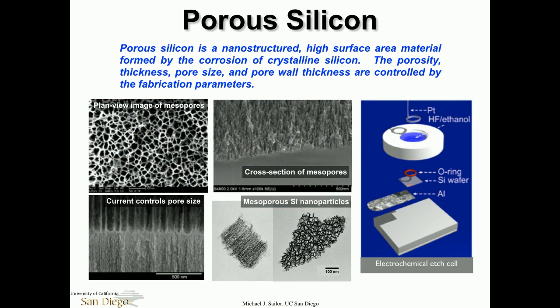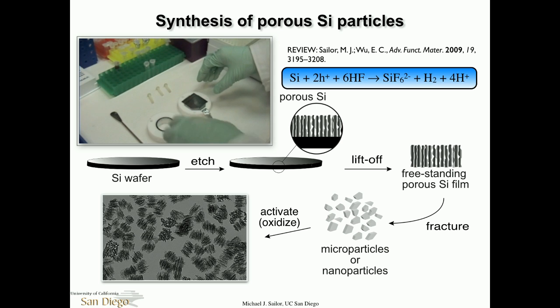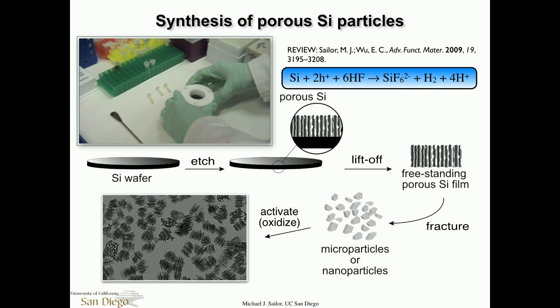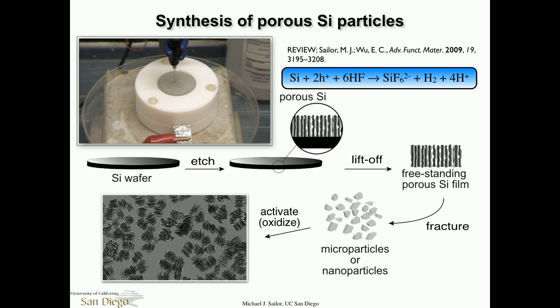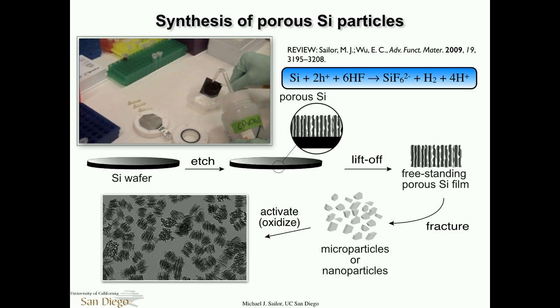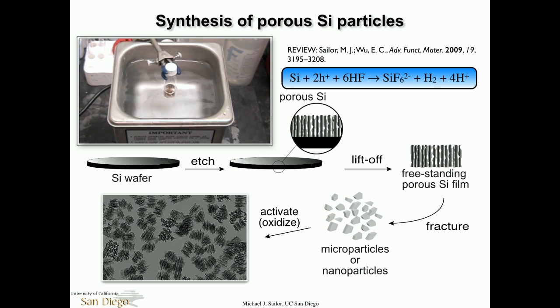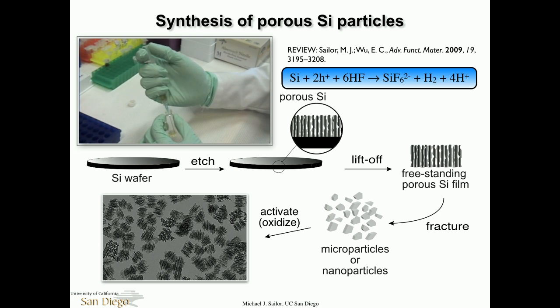The silicon structures we make are based on silicon etched out of single crystal wafers. We machine it electrochemically to produce open porous structures. We put the wafer in an etched cell, run electric current through it — those bubbles are hydrogen gas drilling holes in the silicon. These holes are typically about 10 nanometers with about 10 nanometer pore wall thickness. We make that porous layer, lift it off, break it up by ultrasound, and deliver the particles via syringe.